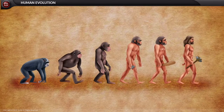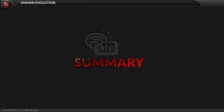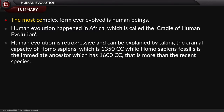Hence, we have understood an outlook of human evolution. To summarize: the most complex form ever evolved is human beings. Human evolution happened in Africa, which is called the cradle of human evolution. Human evolution is retrogressive, as explained by the cranial capacity of Homo sapiens at 1350 cc, while Homo sapiens fossilis, the immediate ancestor, had 1600 cc — more than the recent species.